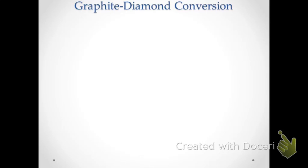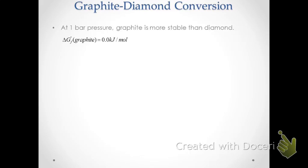Let's look at a simple example involving a solid conversion: graphite to diamond. Superman can take coal in his bare hands, squeeze it, and convert it into a diamond. Graphite is the most stable form of carbon at one bar standard pressure. We can note this by looking at the Gibbs energies of formation — the standard Gibbs energy of formation for graphite is zero, while that for diamond is 2.90 kilojoules per mole.